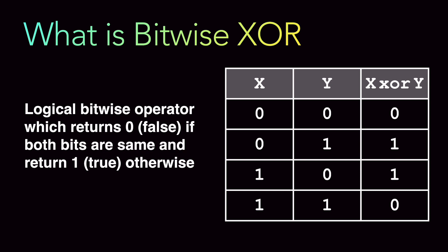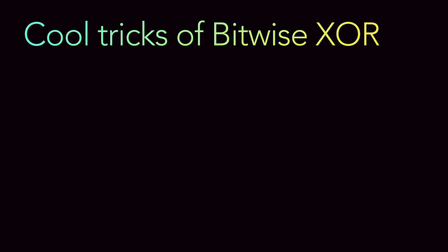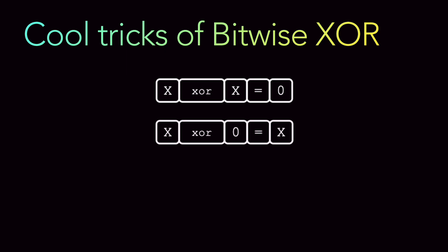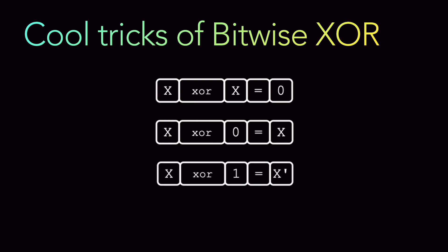There are some cool tricks you should understand about bitwise XOR. If you do a XOR of a number with itself, it gives you 0. If you do a XOR of a number with 0, it gives you the number itself. And if you do a XOR of a number with 1, it gives you the complement of that number. Using these tricks you can solve various applications.